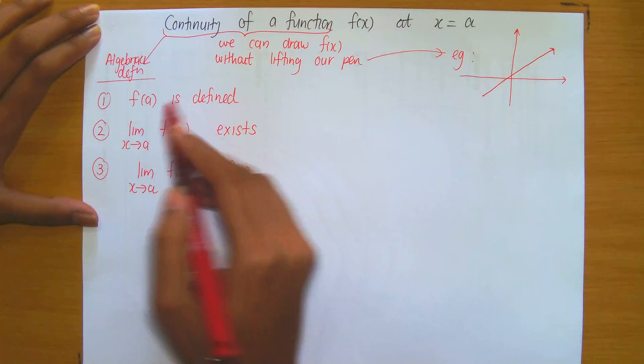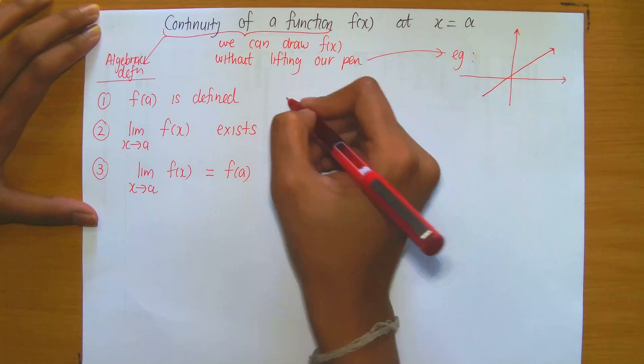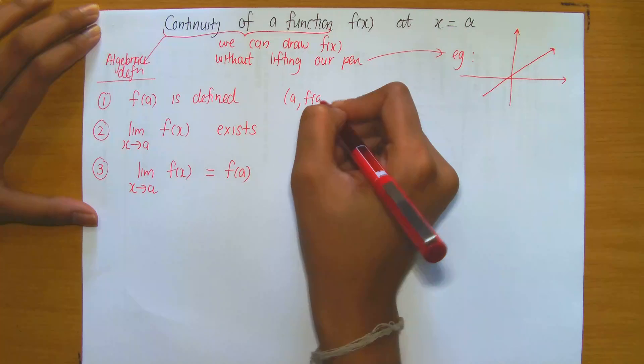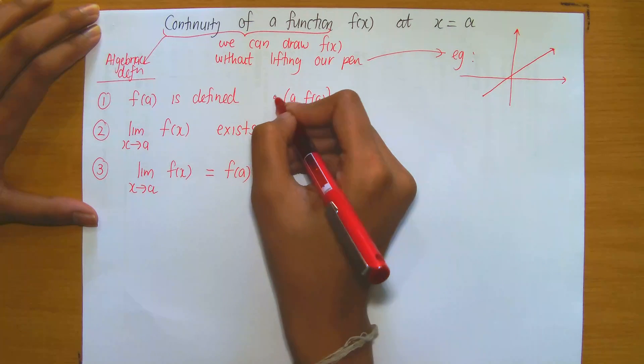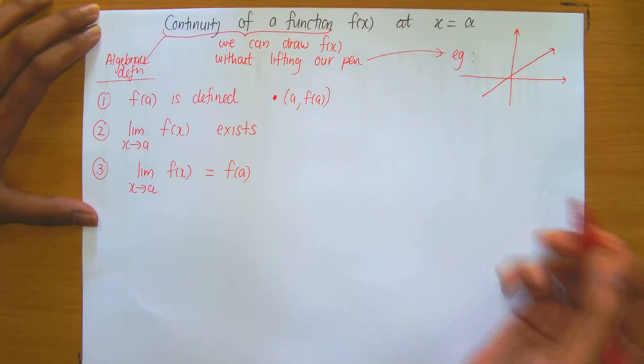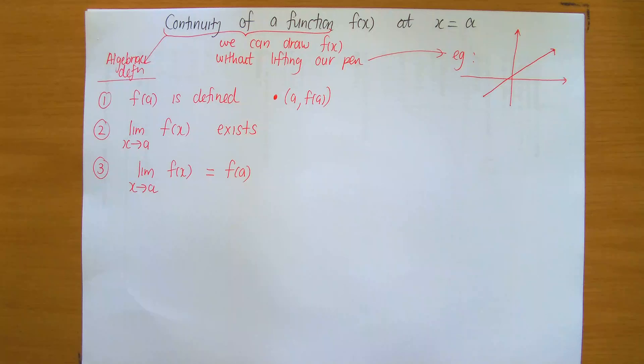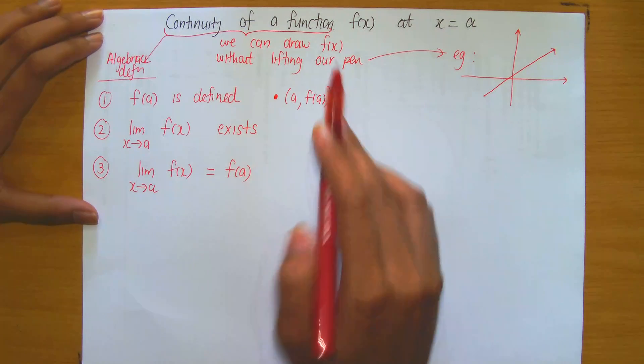Remember, if f(a) is defined, then when you're drawing the point (a, f(a)), since it is defined, that coordinate will be drawn with a solid dot. Keep that in mind based on the notation and the rules we've learnt before.